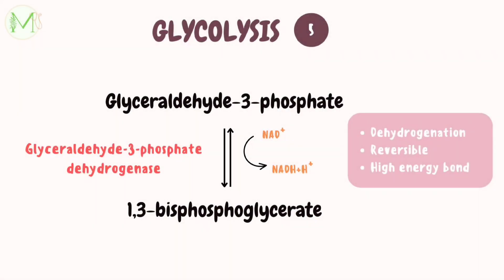In step 5, glyceraldehyde-3-phosphate is dehydrogenated and simultaneously phosphorylated to 1,3-bisphosphoglycerate with the help of NAD+. The enzyme is glyceraldehyde-3-phosphate dehydrogenase, and the product contains a high energy bond.